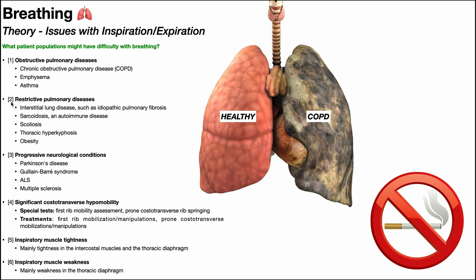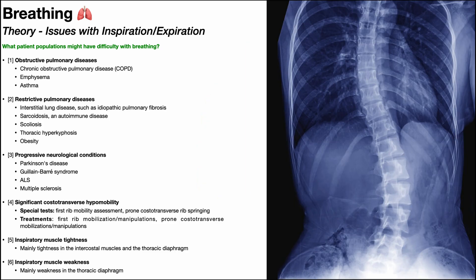The second patient population is those with restrictive pulmonary diseases. Restrictive diseases generally result in difficulty with inhalation, as opposed to obstructive diseases where there's generally more of a problem with exhalation. The first restrictive condition is interstitial lung disease, and an example of that is idiopathic pulmonary fibrosis, where there's actually scar tissue deposited within the lungs, making it difficult to inhale.